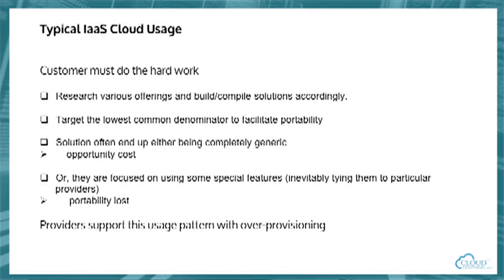If you look at the current situation for infrastructure as a service, you'll find there are basically two actors: the customer and the provider. In this model, the customer really has to do all the hard work. If the customer wants IaaS from a cloud service provider, they have to research various offerings and build compiled solutions accordingly. In doing that, they effectively target the lowest common denominator — looking across providers to build a solution that doesn't lock them into a particular vendor.